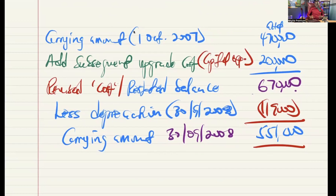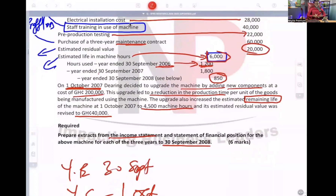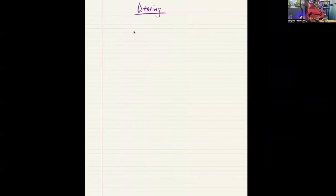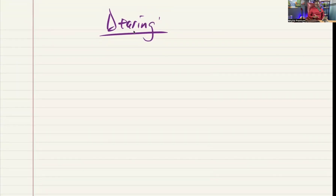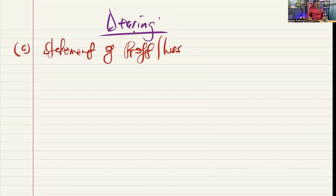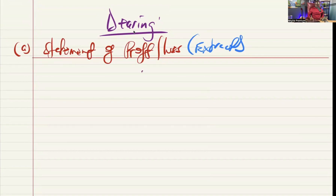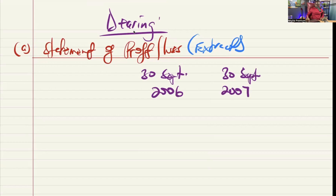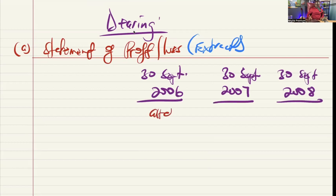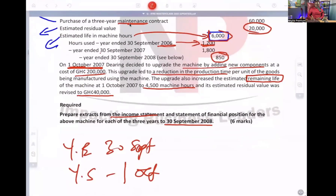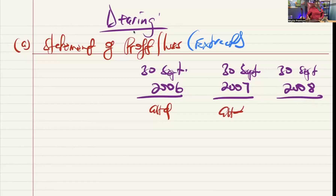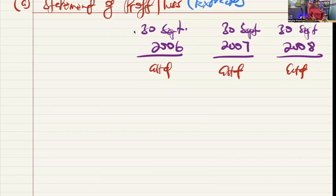This is the workings — we have not yet answered the question, because the question said prepare extracts. It is important you understand the requirements of the question. So let's extract the financial statements. Statement of profit or loss — remember it's an extract, it's important to add that. We work in columnar form for the three years: 30th September 2006, 30th September 2007, 30th September 2008.